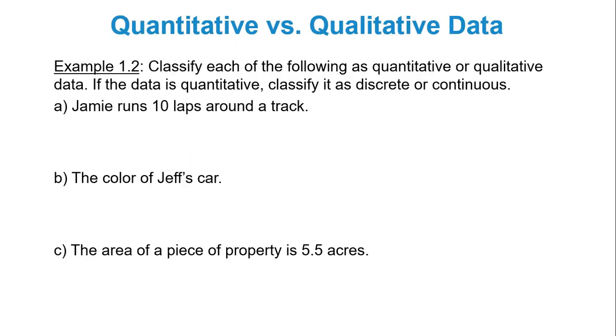Alright, so let's look at quantitative versus qualitative data. Here I'm classifying. If the data are quantitative, then I'm going to classify as discrete or continuous. So Jamie runs 10 laps around the track. If I'm at the starting line of track and Jamie's running around, she crosses the starting line once. That's one lap. She crosses it again. That's 2, 3, 4. I'm counting every time she crosses that starting line. So as a result, first, this is quantitative because it's numeric in form. Not only that, it is discrete because you're dealing with nice pretty whole numbers. What about the color of Jeff's car? Is that numeric? Nope. As a result, it's an attribute or characteristic that has to be qualitative.